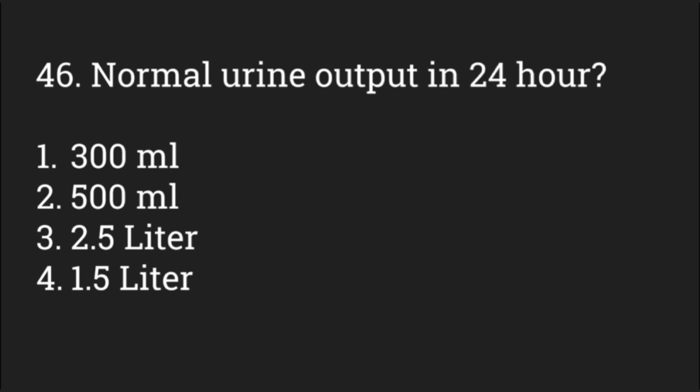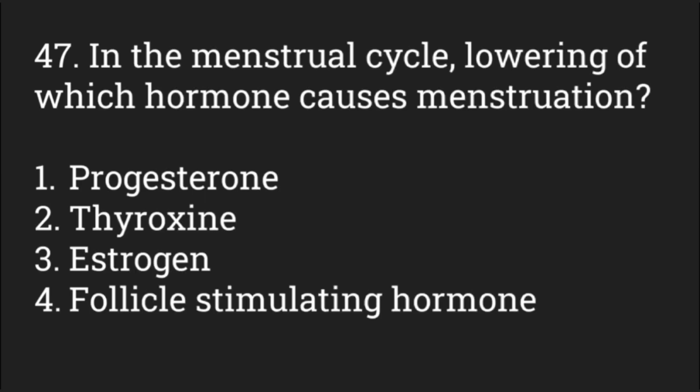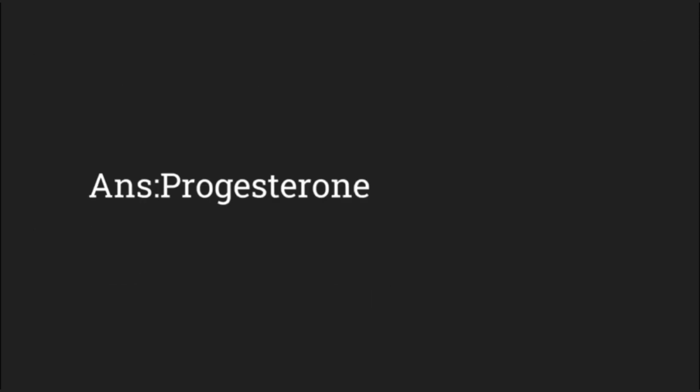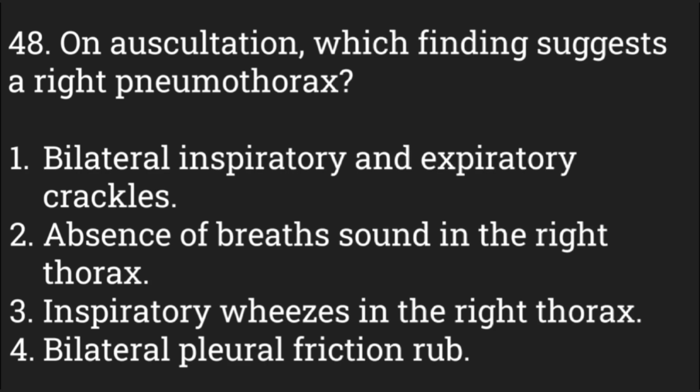Normal urine output in 24 hours is — options: 300 ml, 500 ml, 2.5 liters, 1.5 liters. The answer is 1.5 liters. In the menstrual cycle, lowering of which hormone causes menstruation? Options: progesterone, thyroxine, estrogen, follicle-stimulating hormone. The answer is progesterone.